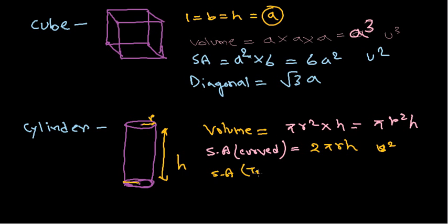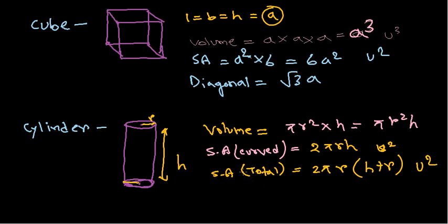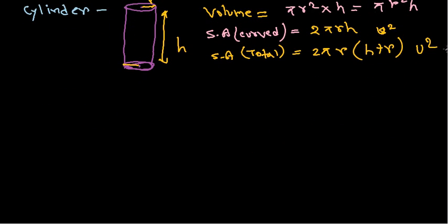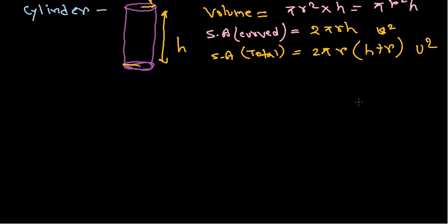For the cylinder's total surface area — which is required most of the time — it will be 2πr(h + r), in square units. How these formulas are derived requires more mathematical background, but just memorize them as they will be required for your future studies.